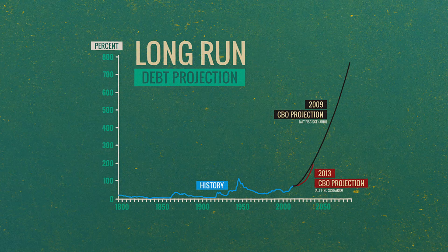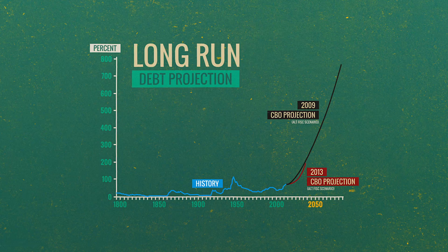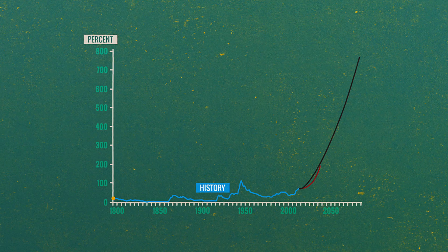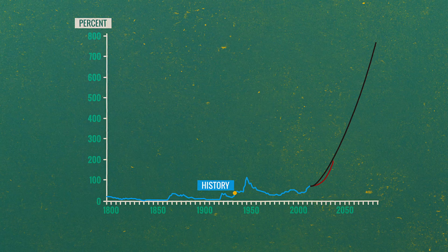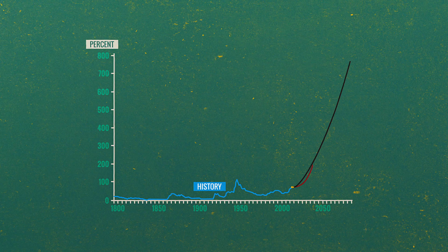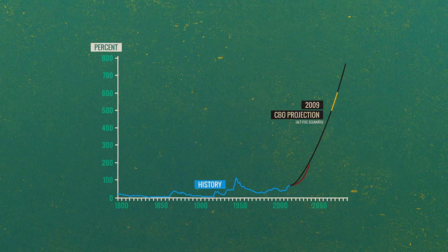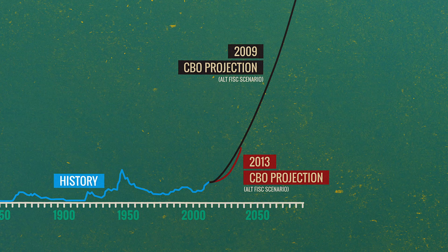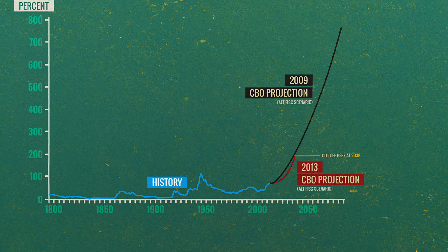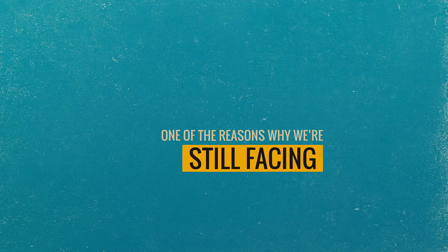Going even further into the future — and also into the past — you can see how the debt-to-GDP ratio evolved in U.S. history. Most historical increases were during wars; you see the blip in the 1940s for World War II, it came down in the 50s and 60s, rose in the 80s, and then started rising again recently. A CBO projection from 2009 and a newer 2013 estimate are both shown. The picture hasn't changed much, and that's why we're still facing fiscal debates about what to do with this problem.